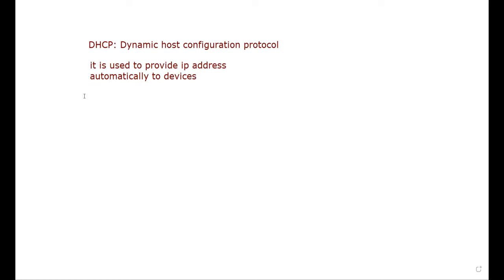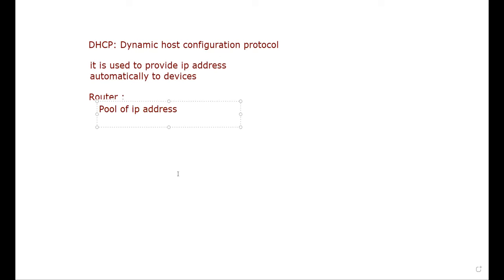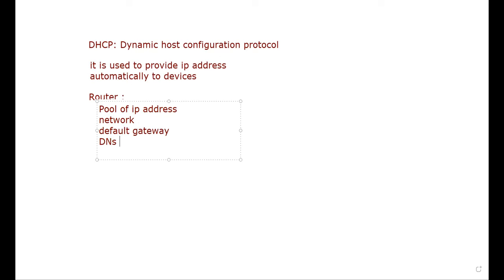DHCP is a very easy process. In this we have to make one router as a DHCP. Some students have done this topic before - DHCP via router and DHCP via server. If anyone missed this topic, this video is for you. In DHCP via router, you have to create one pool of IP addresses, and in that pool you have to configure the network and default gateway. If you have a DNS server, with the help of DHCP you can provide DNS also.